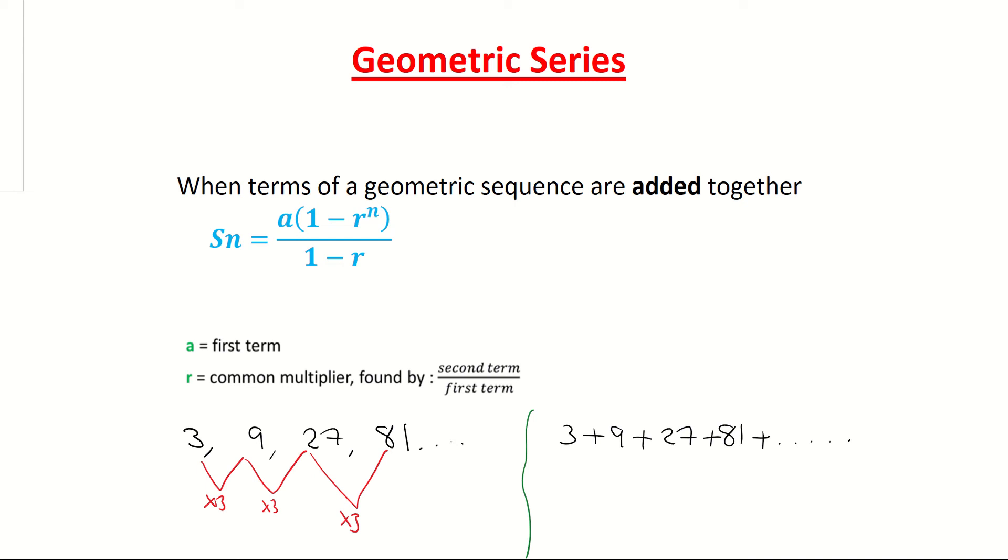The formula here, Sn equals A times 1 minus R to the power of n all over 1 minus R, will help us find the sum of all of the terms. So S here stands for the sum of all the terms. The A stands for the first term. That's my first term in my sequence, so that would be my 3 for instance. My R then is my common ratio, my common multiplier basically, and that's found by taking any term and dividing it by the term in front of it.